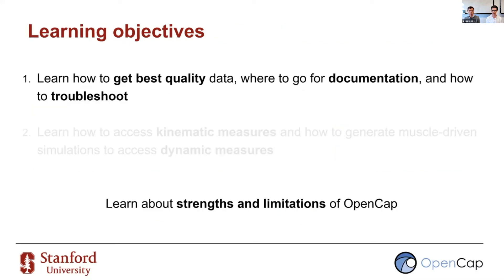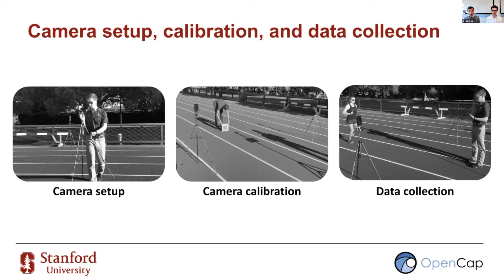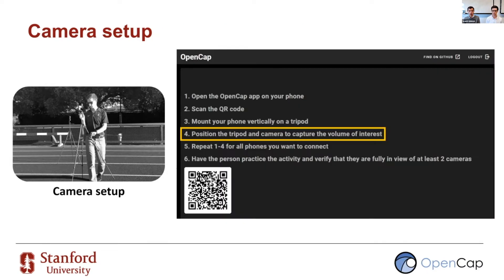Let's start with the first objective. There are three different parts of OpenCAP you can optimize to obtain best quality data: the camera setup, the camera calibration, and the data collection itself. When starting a session on the web application, you will be prompted to scan a QR code, to mount the camera to a tripod, and to position the cameras to capture the volume of interest.